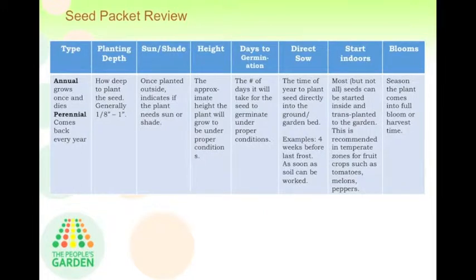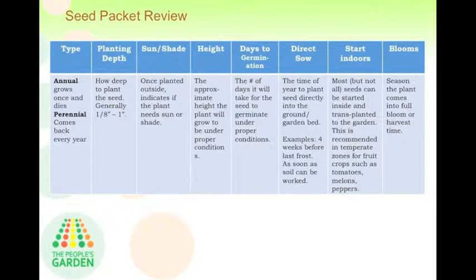'As soon as soil can be worked' doesn't mean frost won't come again, but for plants such as peas, radishes, and beets, it's fine if they get frosted once planted. Most seeds — but not all — you can also start inside to jump-start the season. If you're in a cooler USDA zone such as New York or Washington State, you'll want to start tomatoes, melons, and peppers — fruits that really need a lot of heat to produce — inside, about four to eight weeks before last frost. Some seed packets also tell you when the plant comes into full bloom or full harvest time. Always check your seed packet; don't be afraid to grow things you haven't grown before, because a seed packet will often tell you exactly how to get it started.